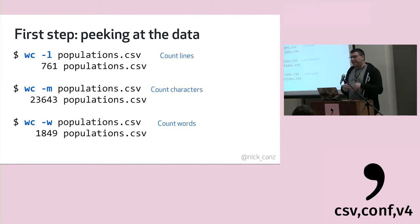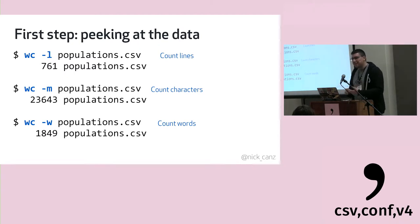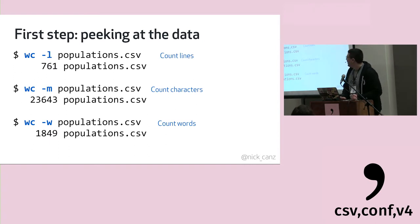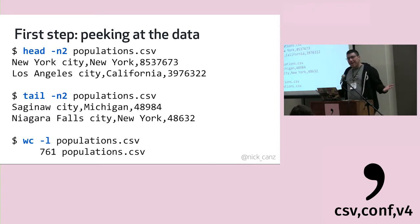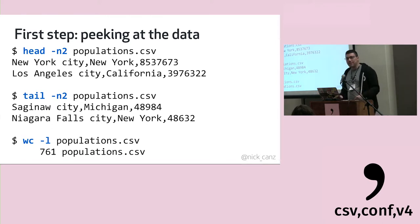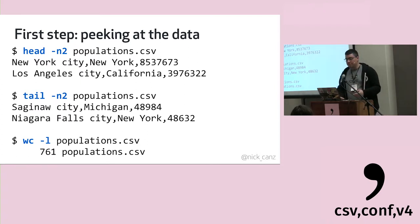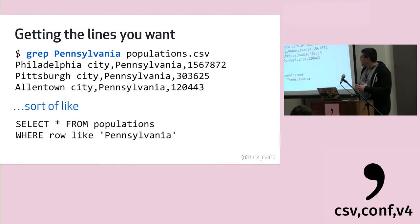'wc' can count lines, characters, and words — characters and words are less relevant for CSV files, but useful if you want to check tweet length. To recap from peeking at our population CSV: we have a three-column CSV with city, state, and population. It looks like big cities are at the top, smaller cities at the bottom, with 761 cities in total.